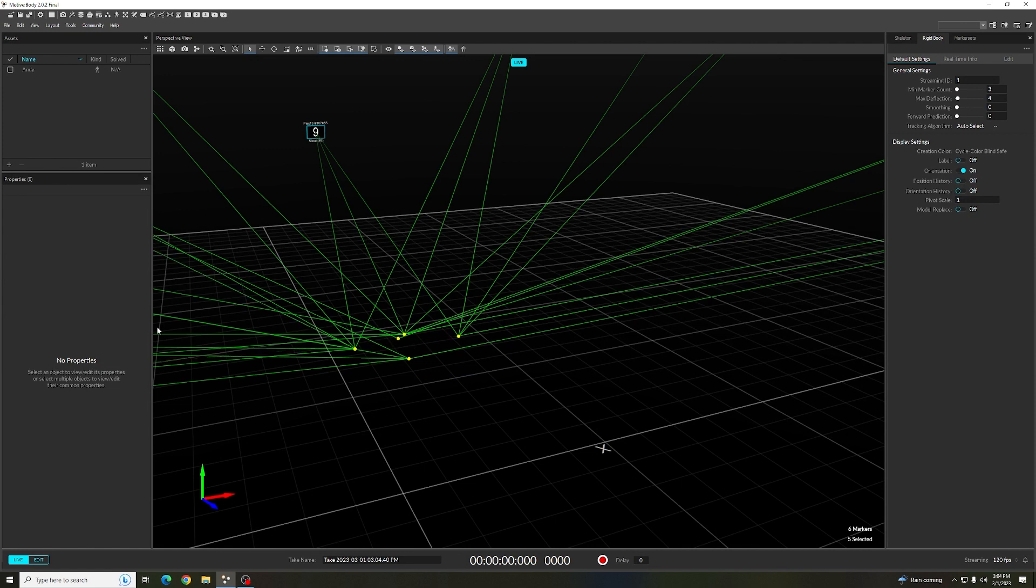Ensure that it looks correct, then either create a new rigid body through the plus button of the assets tab or through the hotkey Control T.